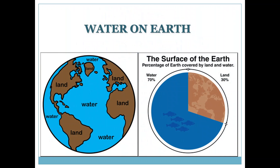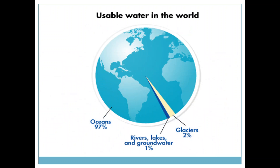Do you know, children, what is the percentage of water on the earth? About 70% of the earth's surface is covered with water and only 30% is covered with land. The water on the land is present in different sources in different percentages. About 97% of water is present in oceans, 1% in rivers, lakes and groundwater, and 2% of water is present in the glaciers.